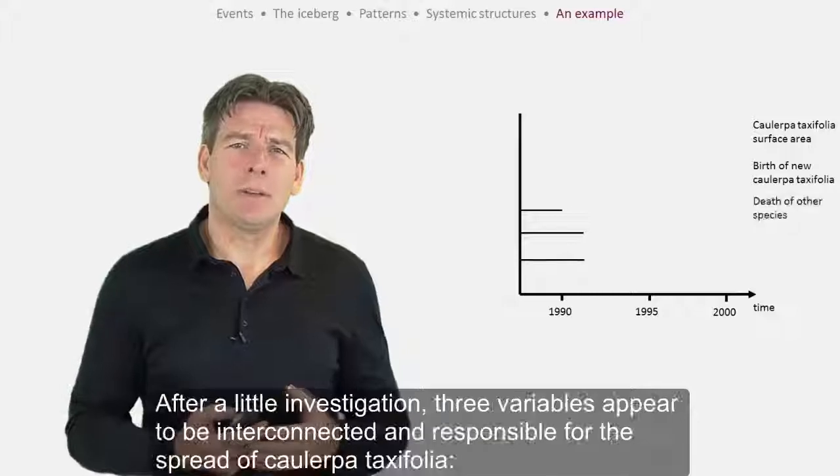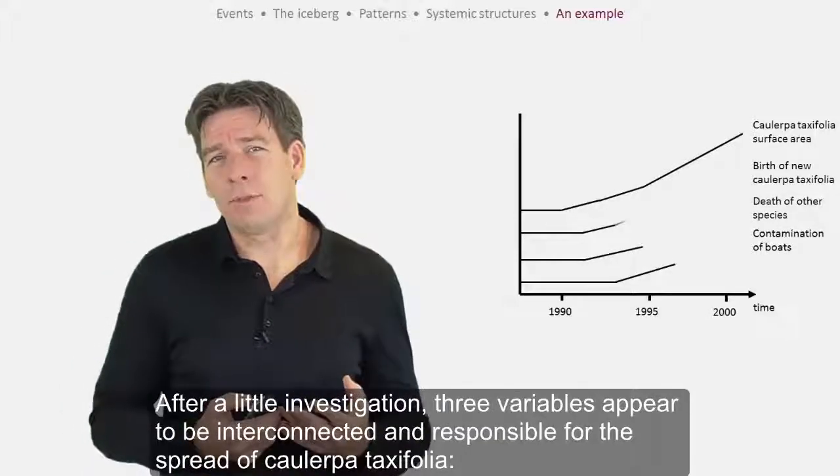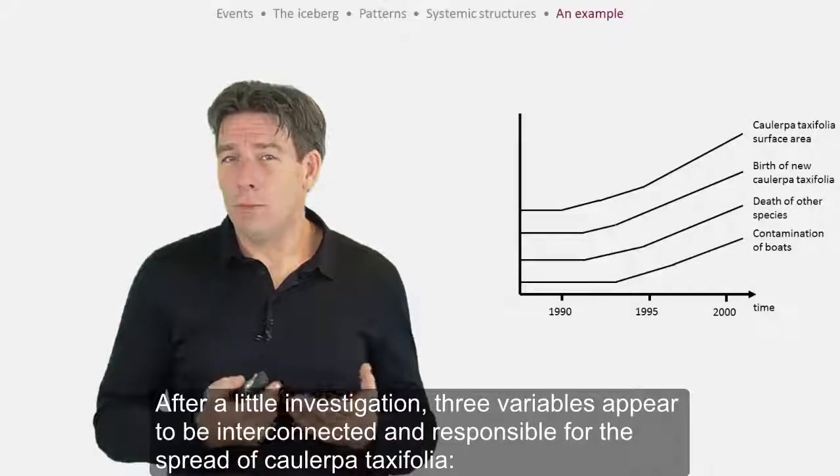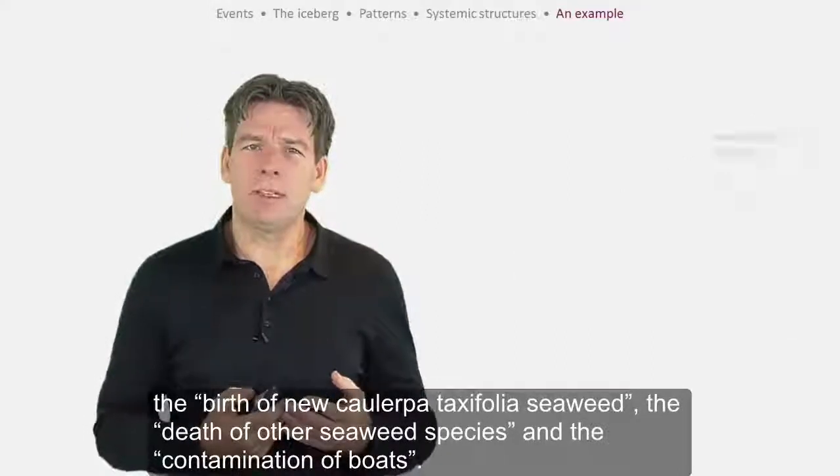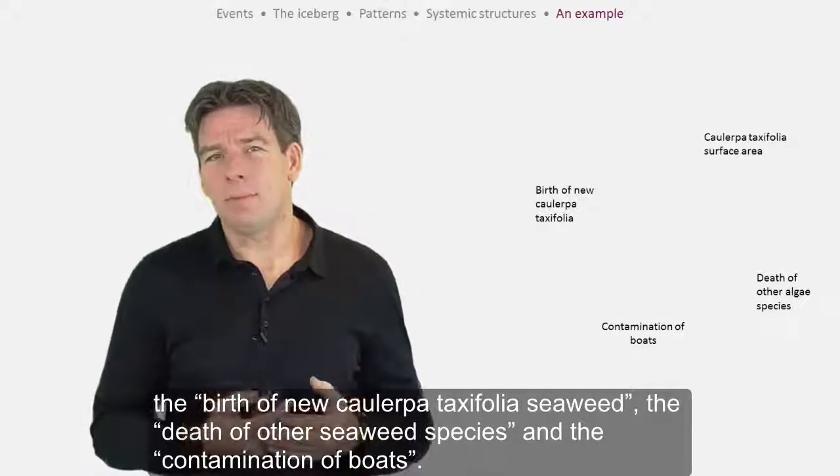After a little investigation, three variables appear to be interconnected and responsible for the spread of Caulerpa taxifolia: the birth of new Caulerpa taxifolia seaweed, the death of other seaweed species, and the contamination of boats.